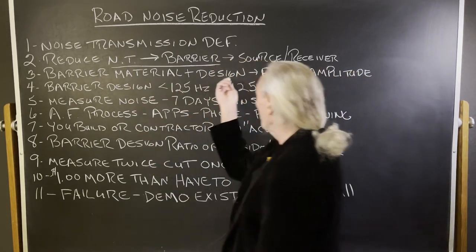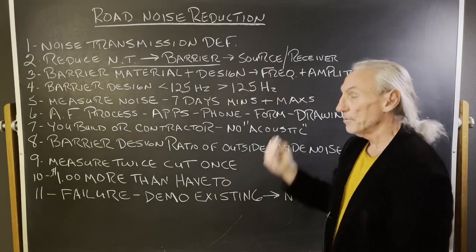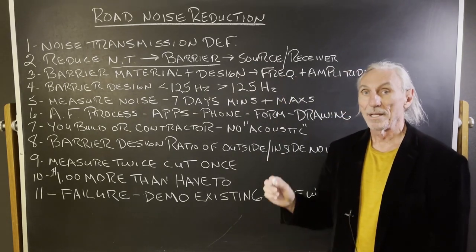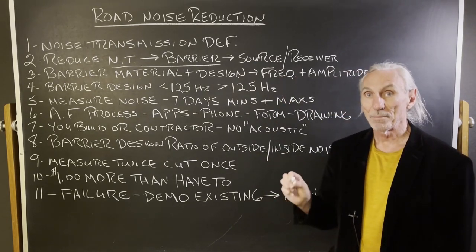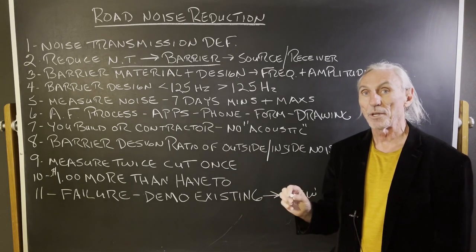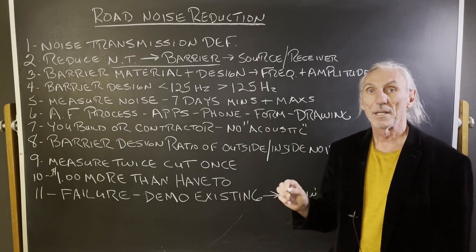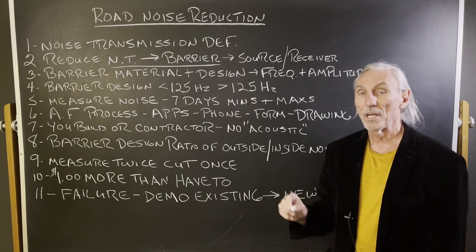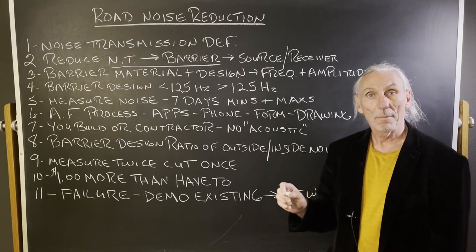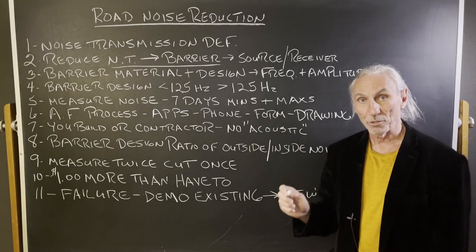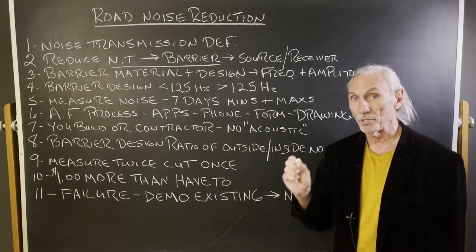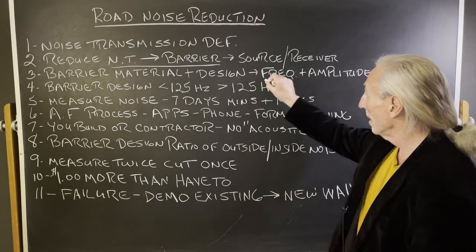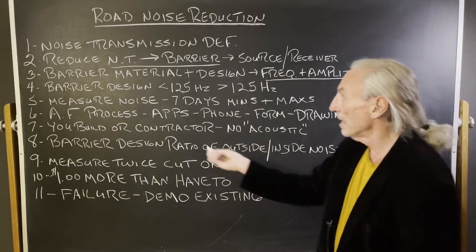The barrier material and design is frequency and amplitude dependent. What does that mean? You must measure the noise. We must know the frequency — where it sits in the frequency range. We must know how big or how strong it is — that's the amplitude. Frequency and amplitude are two very critical elements.